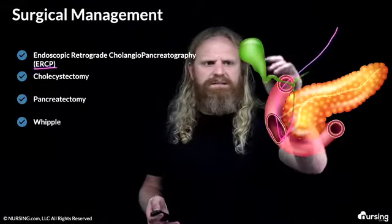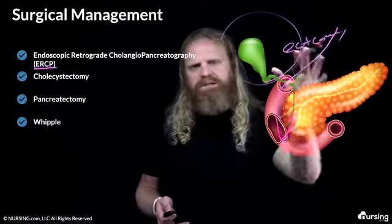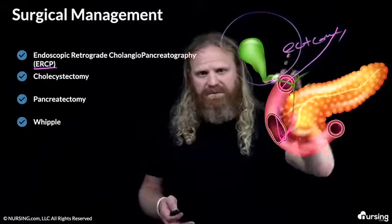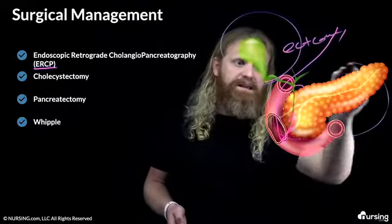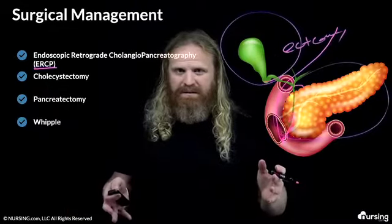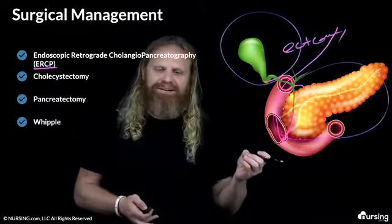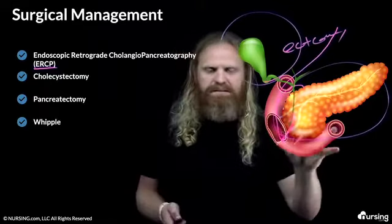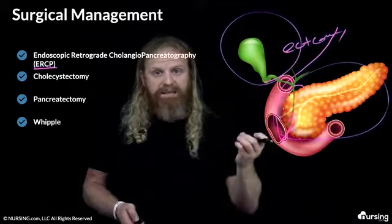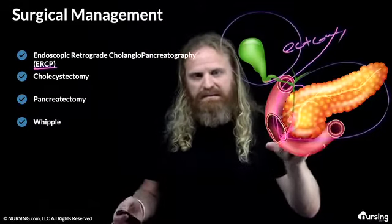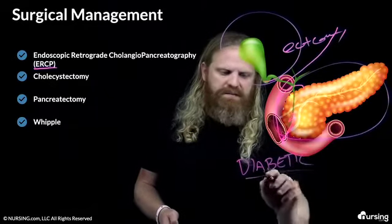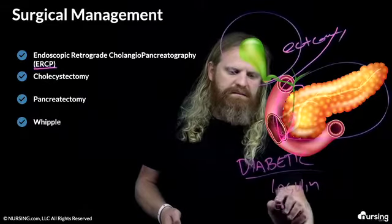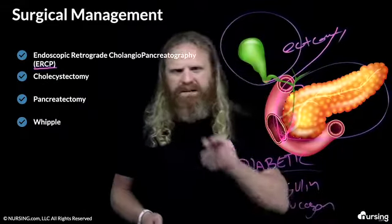Another thing we might do is a cholecystectomy — the 'ectomy' part means we're taking out the gallbladder so we're not having all those problems anymore. Then there's also a pancreatectomy, which means taking the pancreas out entirely. If we take the pancreas out, it secretes all those digestive enzymes, insulin, glucagon, amylase — all that stuff. So if we take it out, these patients are going to immediately become diabetic and will need insulin, glucagon, and all those digestive enzymes as well.